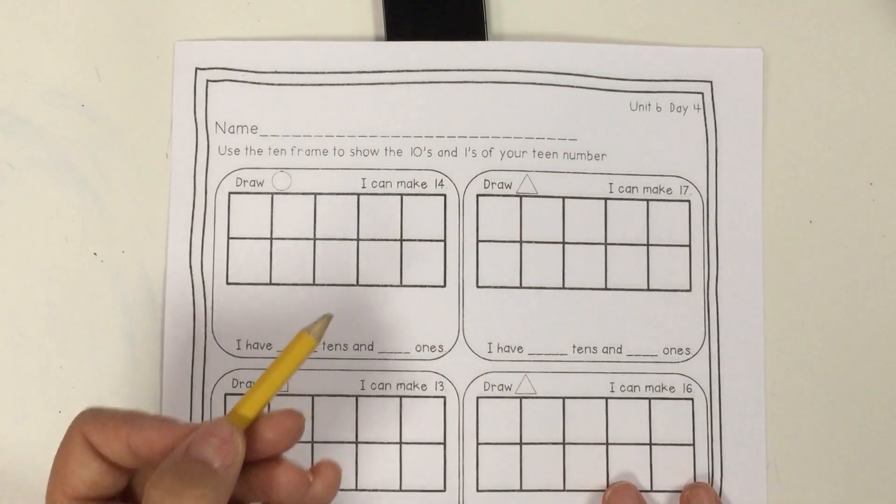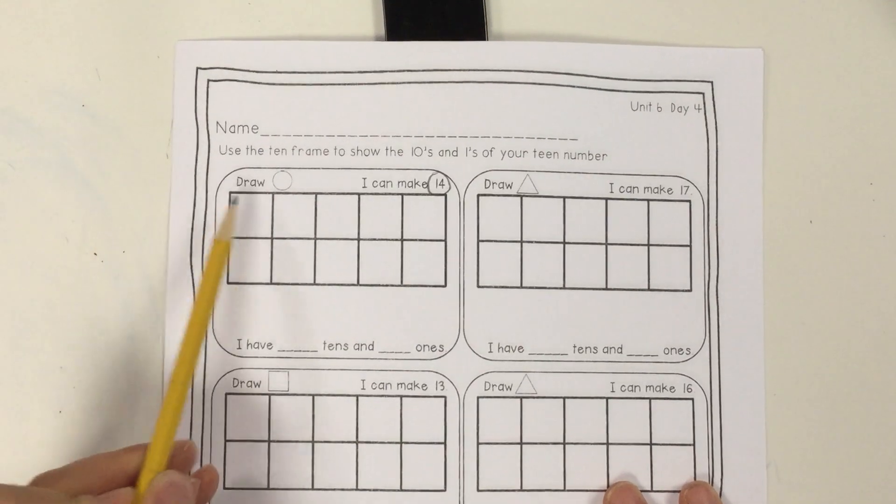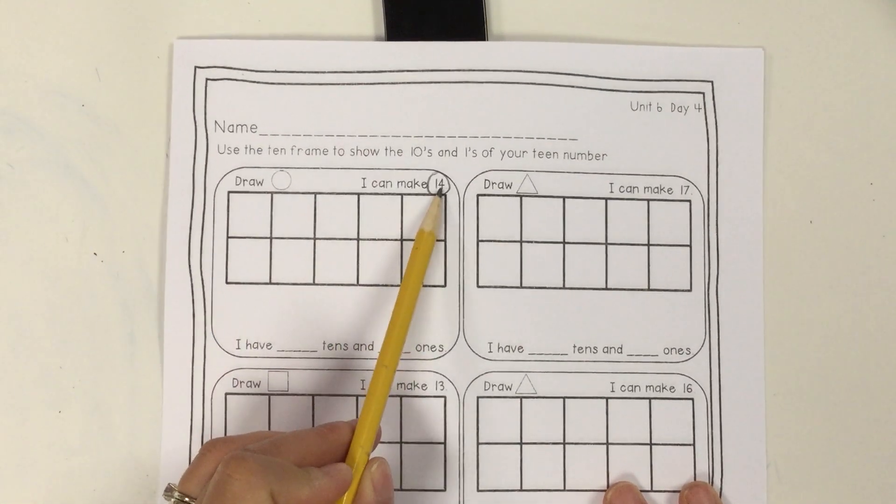So your teen number here is 14. Do you see that? And it says, draw circles. So I'm going to draw 14 circles.